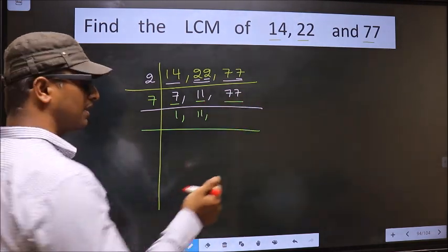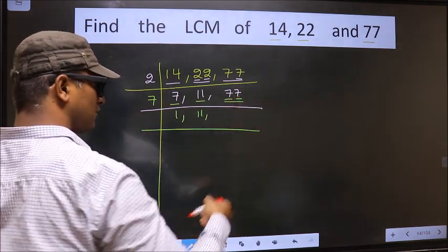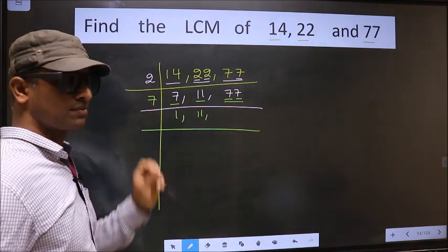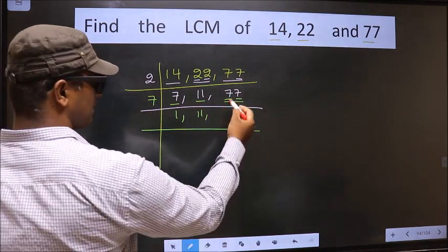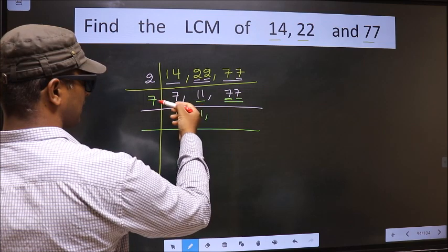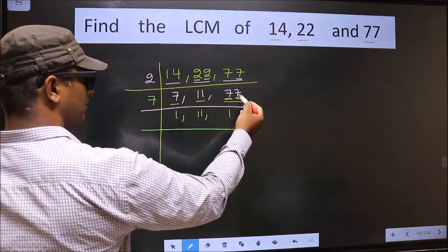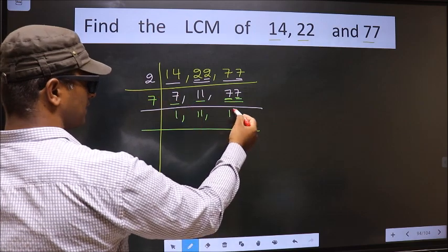The other number 77. Observe here. Each digit is 7. So, this number is divisible by 7. Now, first number is 7. When do we get 7 in 7 table? 7 times 1 is 7.